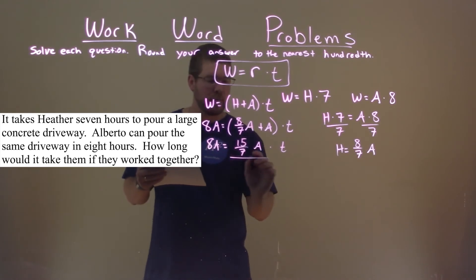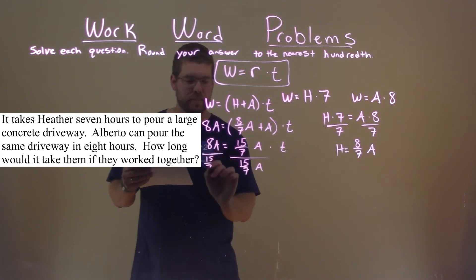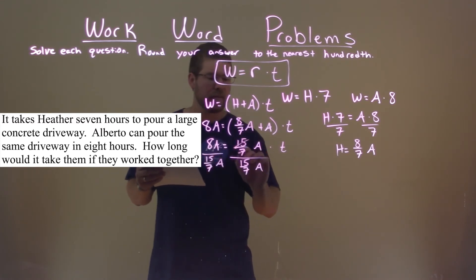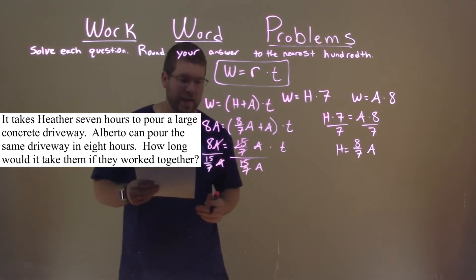If we divide both sides by fifteen-sevenths A, that cancels out here, same with our variable on the right side.